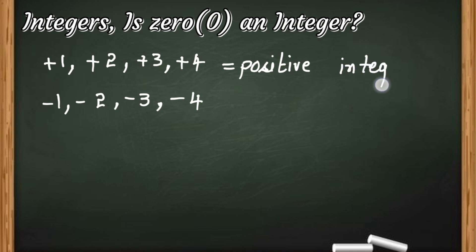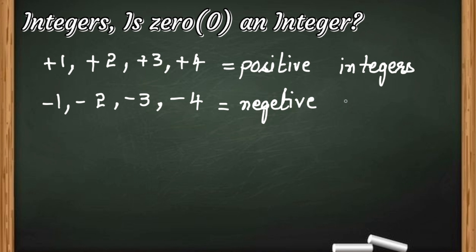Similarly, numbers with negative sign — that is, minus 1, minus 2, minus 3, minus 4 — are called as negative integers. So, positive numbers are called as positive integers and negative numbers are called as negative integers.